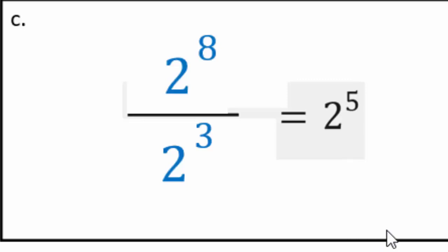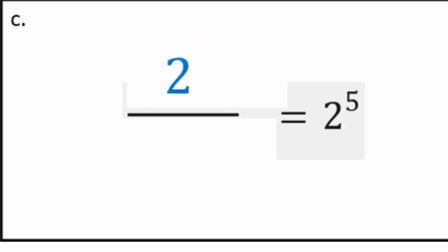Do you think you can come up with another answer? Pause the video and see if you can replace 2 to the 8 with something else. For instance, I can say 2 to the 12 — then what does the denominator have to be? 2 to the 7, because 12 minus 7 is 5. Good job!